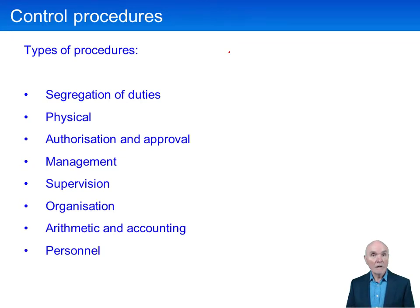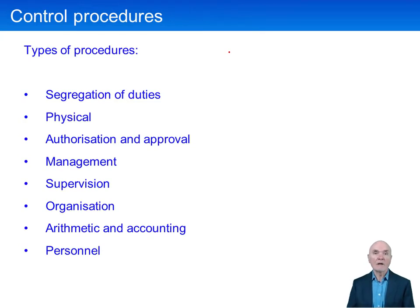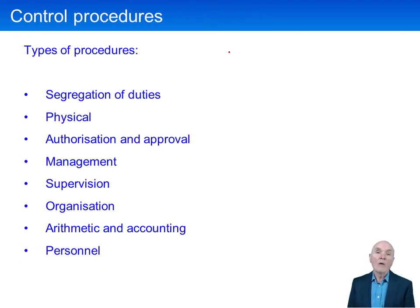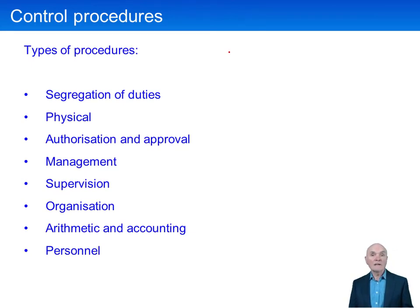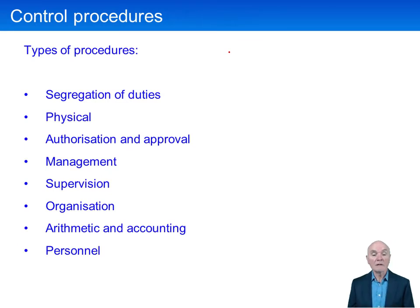Physical control: lock away cash, lock away inventory, lock down the laptops on the desk, put markers on them so that if they are stolen, they are recognised as something which has in fact been stolen. Authorisation and approval: authorising orders, authorising overtime, authorising credit limits on new customers — all very, very important and terribly common in internal control.